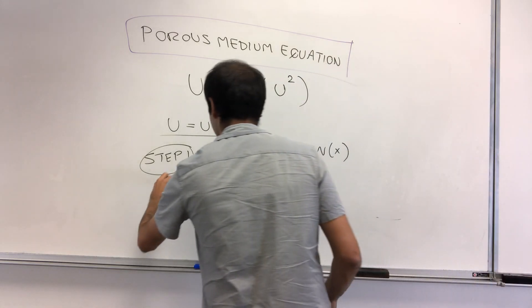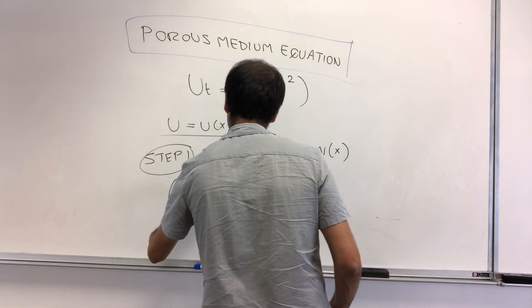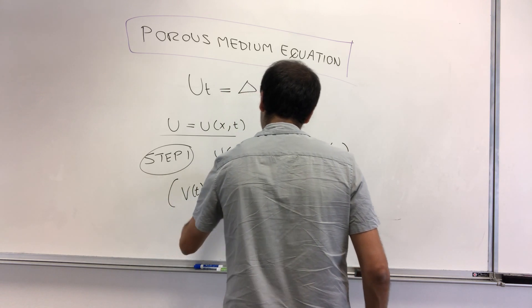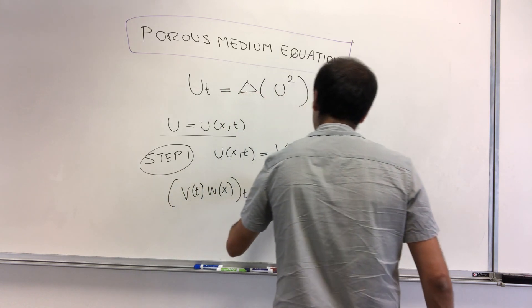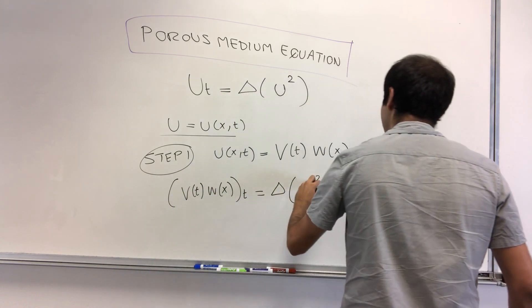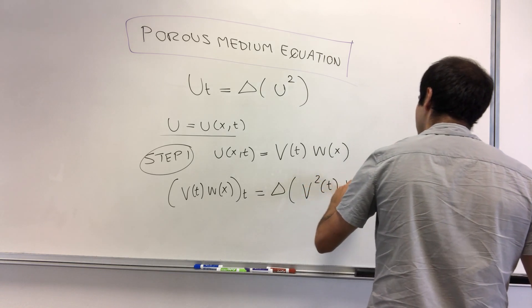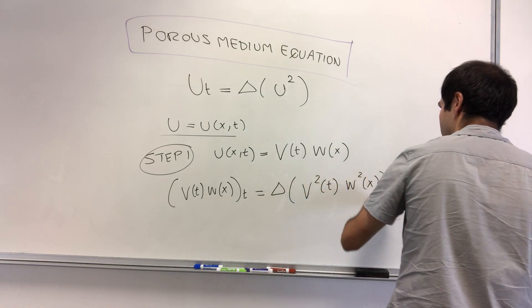All right, and then if you plug this in, you get v of t w x with respect to t equals Laplacian of v squared of t times w squared of x. Here, the Laplacian is with respect to x.